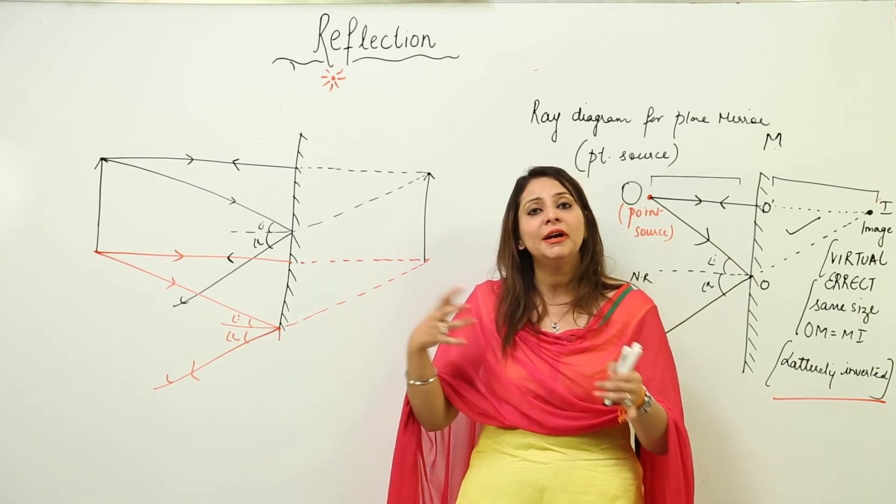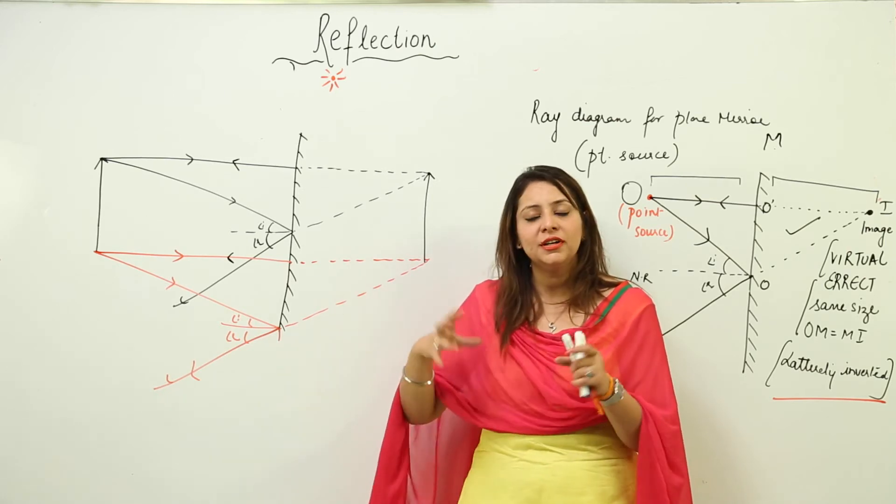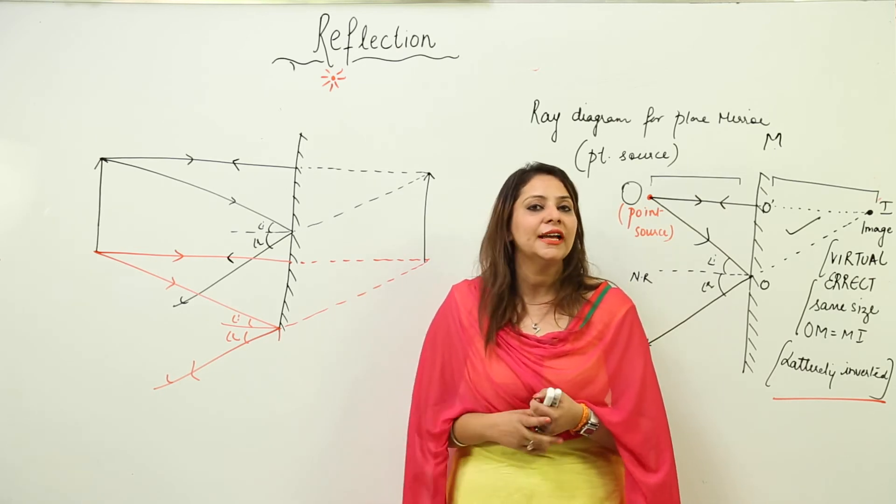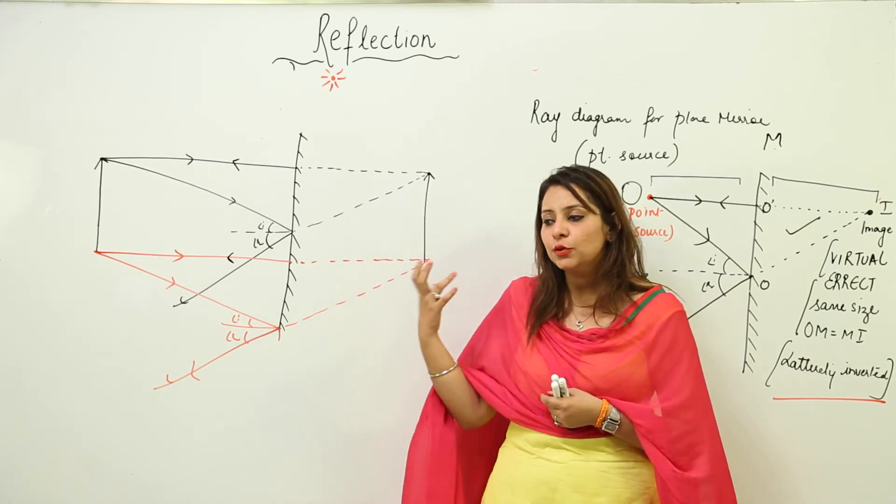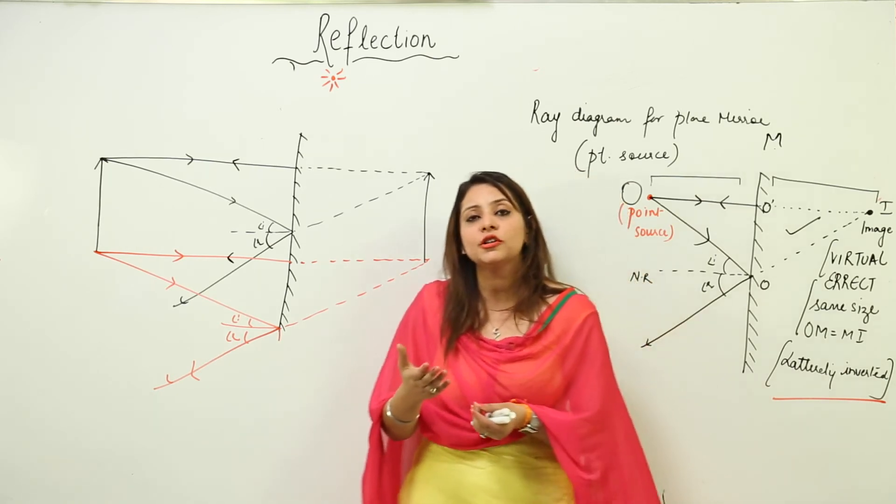Moreover, you know that whenever we want to get multiple images, we can get them by placing the plane mirrors at different angles. So we can get multiple images. That means plane mirror is serving an important use because it is used in many things.